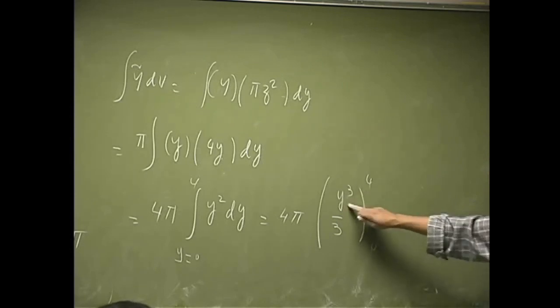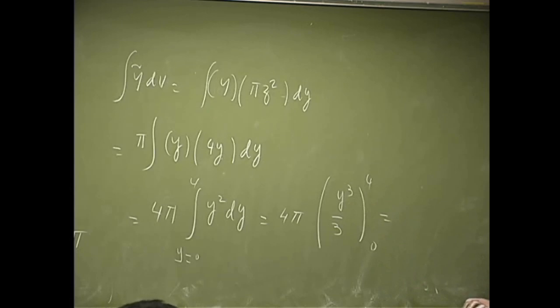So, that's 4 and 4, 16 times 4, 64 times 4. That's 256 pi over 3.